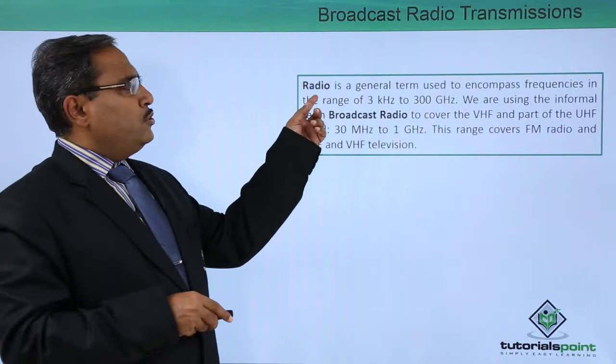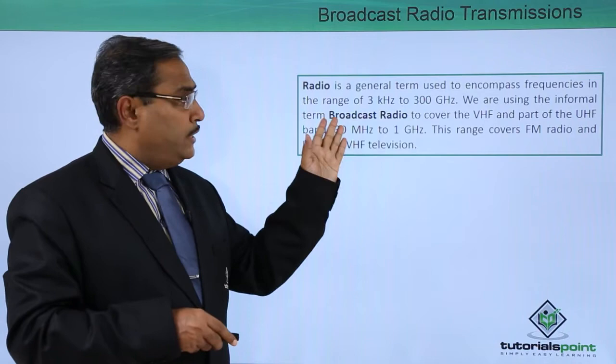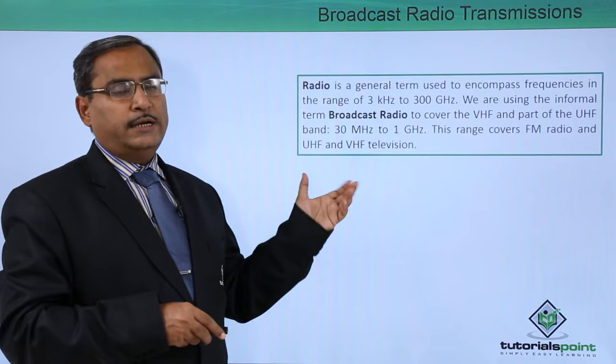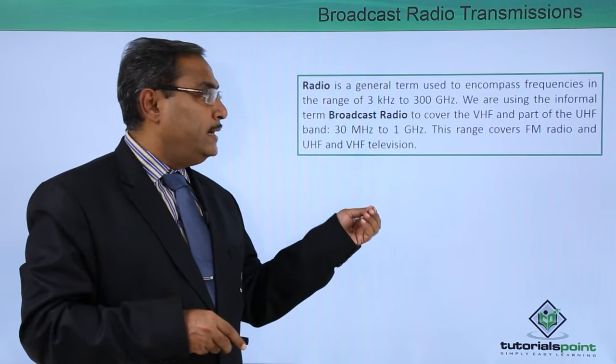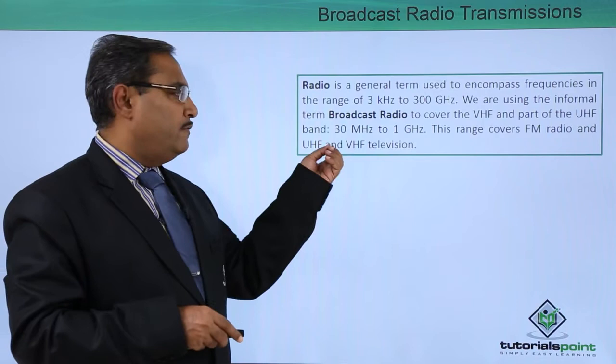Radio is a general term used to encompass frequencies in the range of 3 kilohertz to 300 gigahertz. We use the informal term 'broadcast radio' to cover the VHF and part of the UHF band — that is 300 megahertz to 1 gigahertz — and this range covers FM radio and also UHF and VHF television.